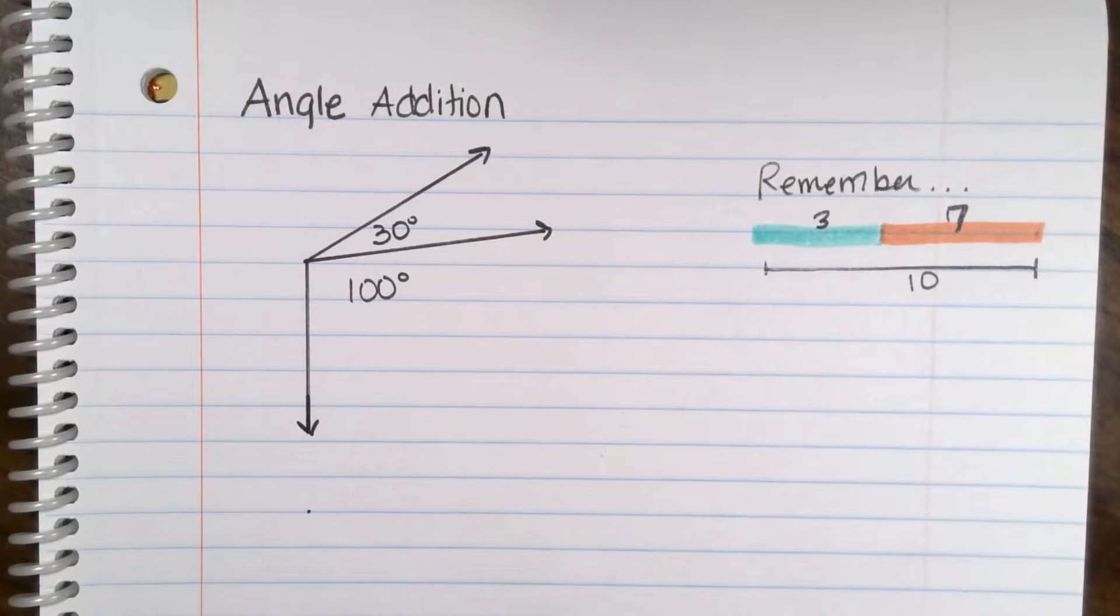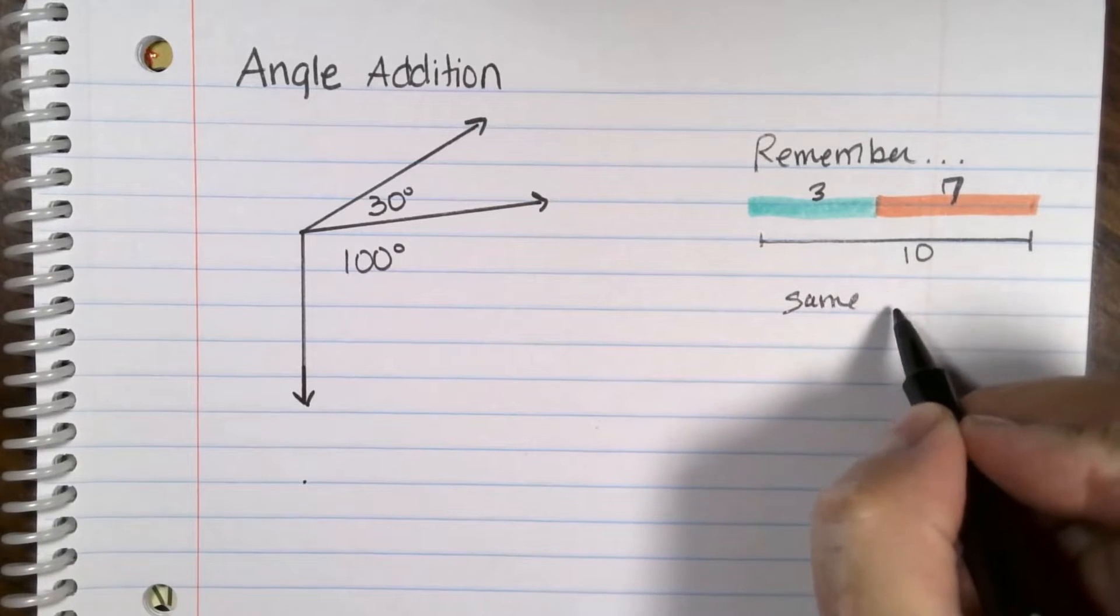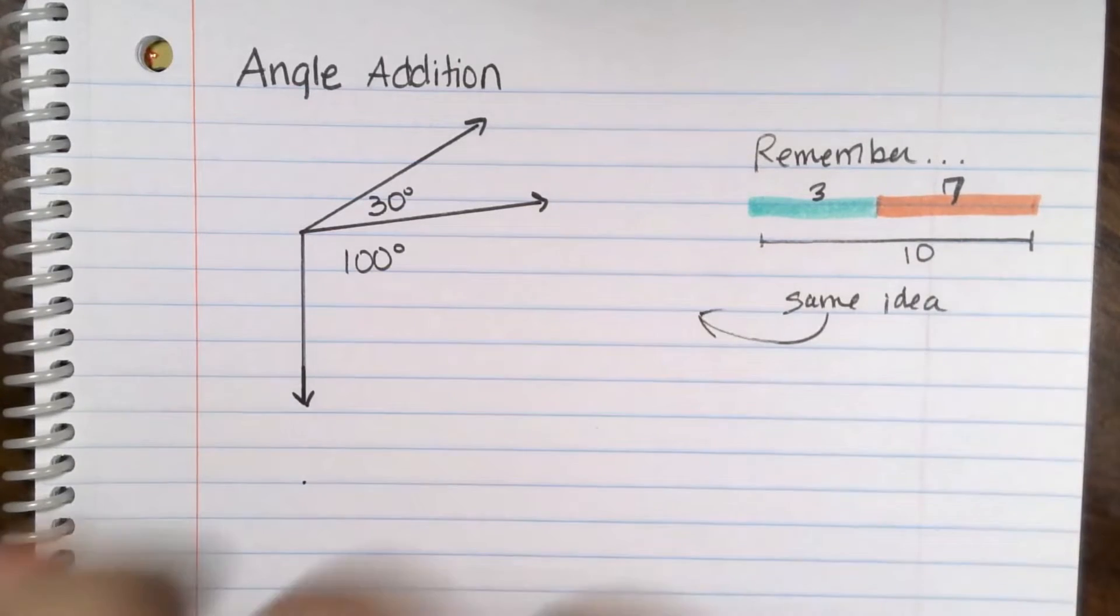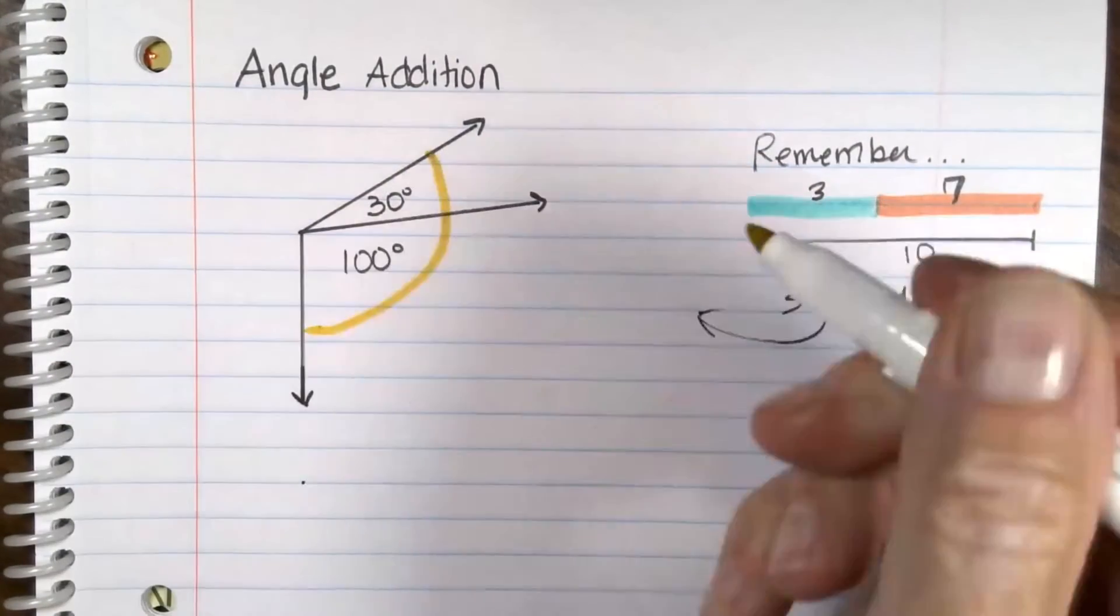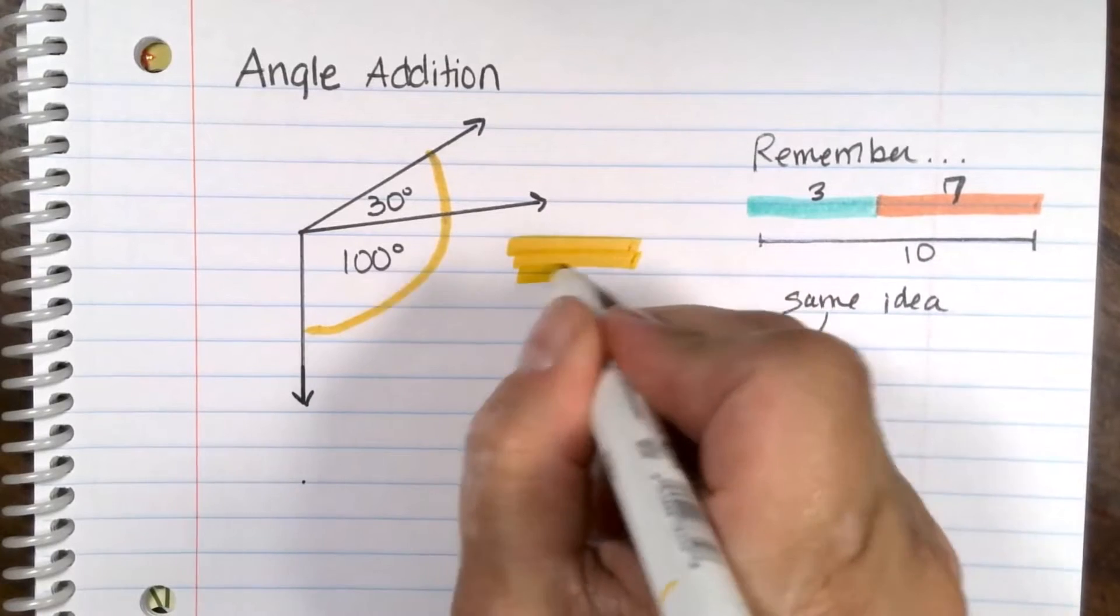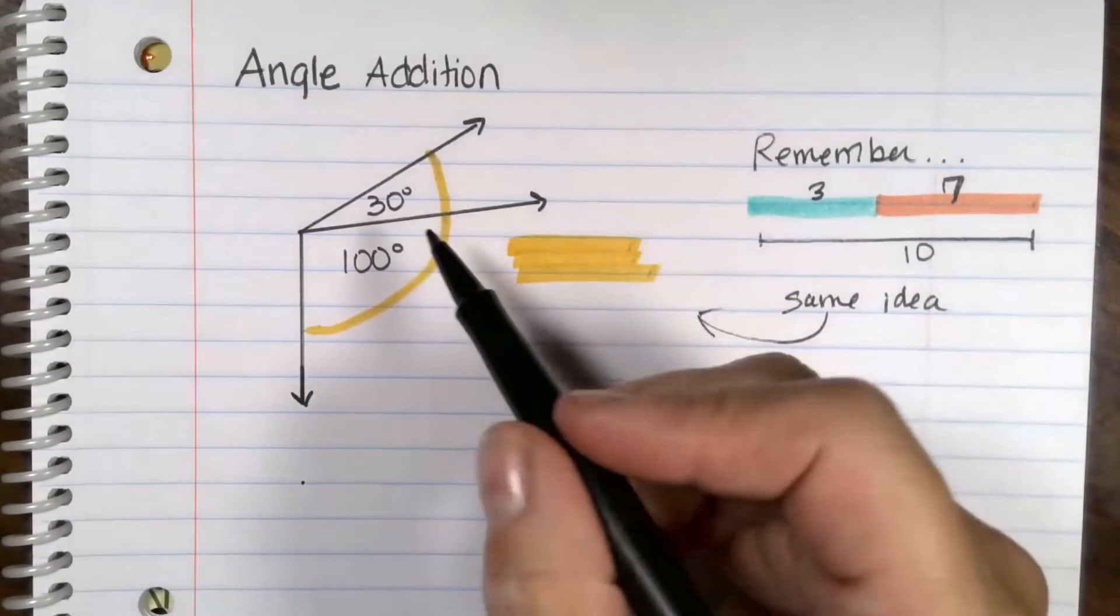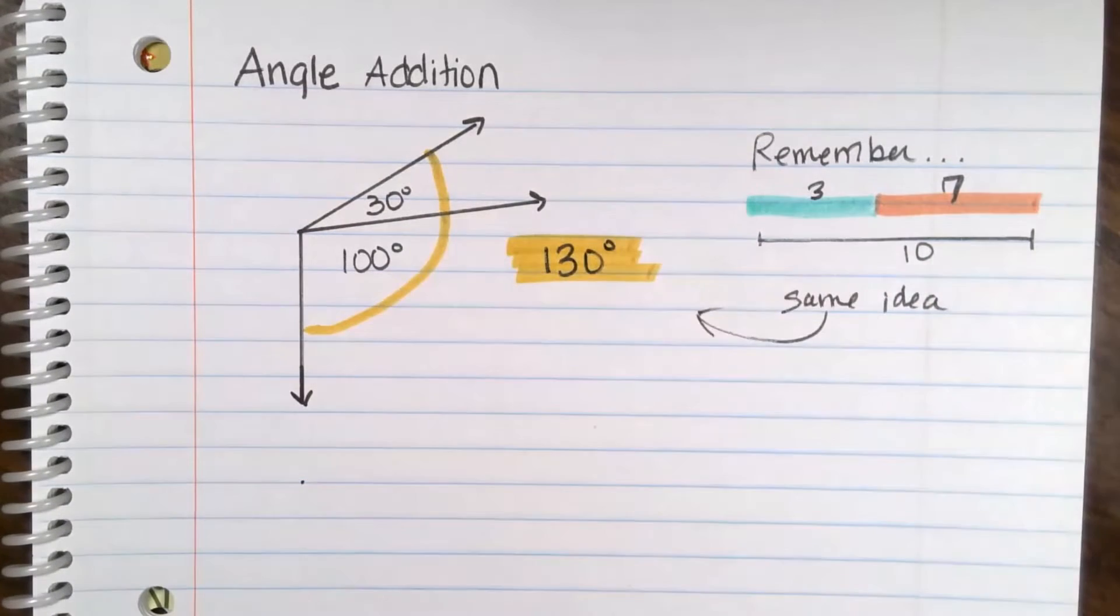Angle addition is the same idea. So if you wanted to know how big this entire angle was, all I got to do is add those two together. 30 plus 100 would be 130 degrees.